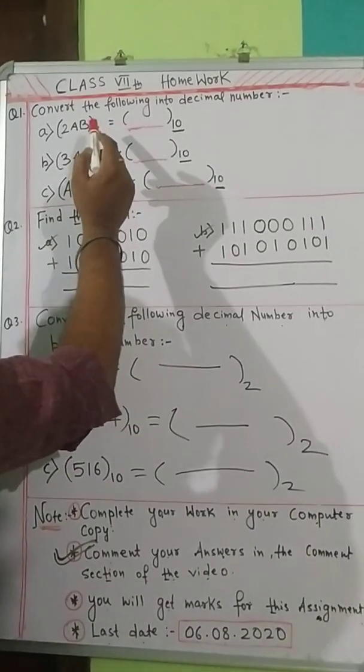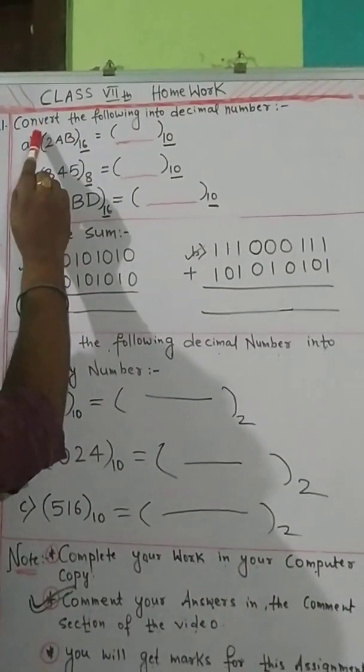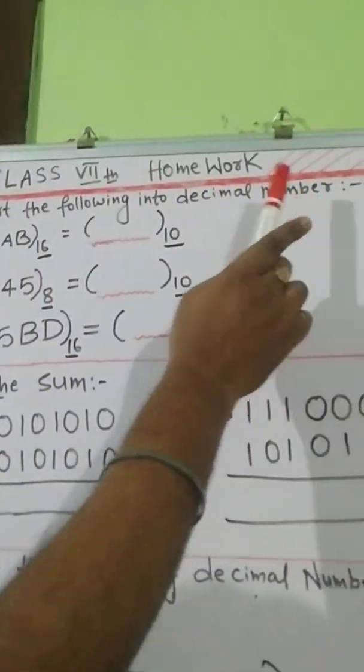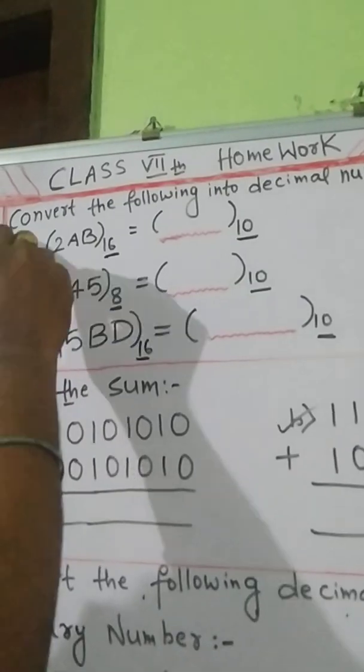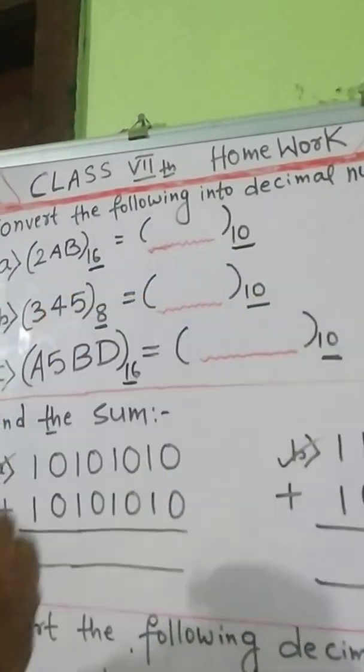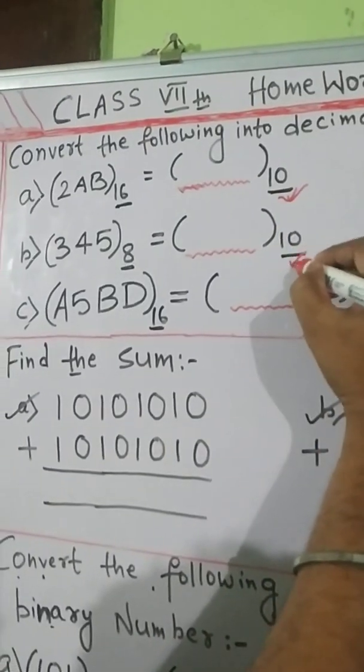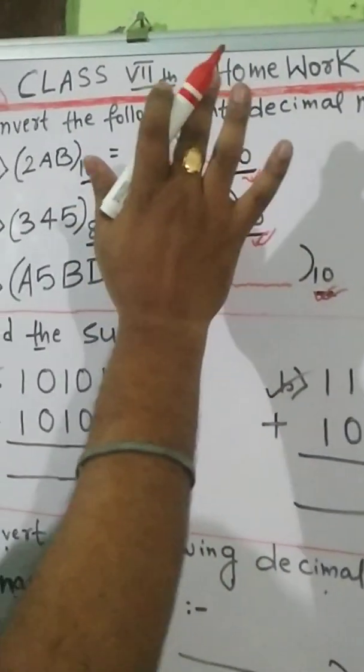So if you will see the first question, it is to convert the following into decimal number. These three questions you have to convert into decimal number. If you will see the base is 10, 10, and 10. So that is the decimal number base.